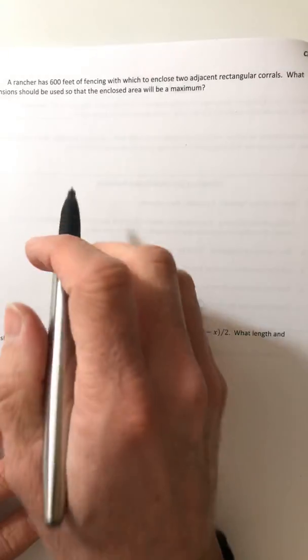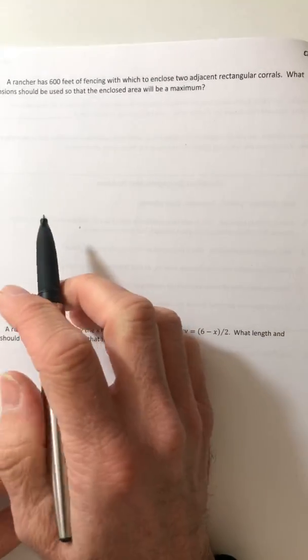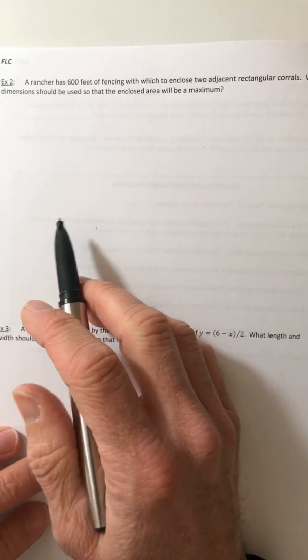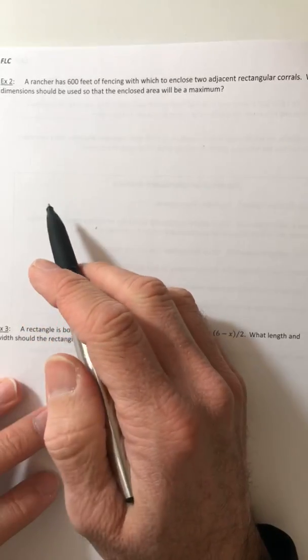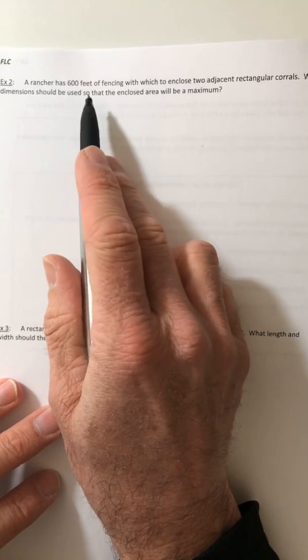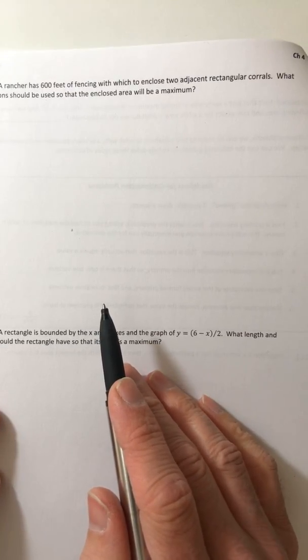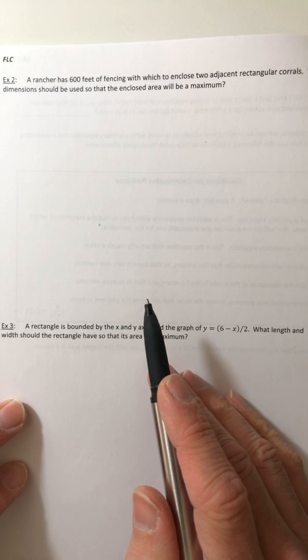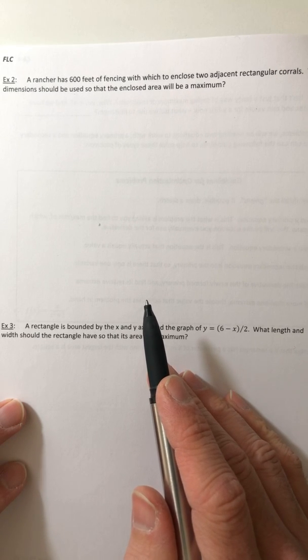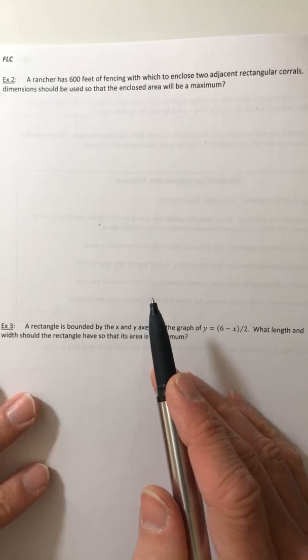Welcome back campers. All right, let's look at a couple more problems with optimization. So from your notes, example two: a rancher has 600 feet of fencing with which to enclose two adjacent rectangular corrals. What dimensions should be used so that the enclosed area will be a maximum?